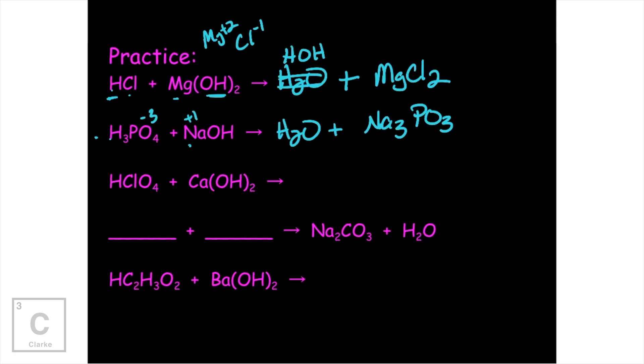Why don't you hit pause and try to work the next three? Okay, let's see how you did. So again, we're going to have water. Calcium, that's a two. Perchlorate, that's a one. And so we're going to get Ca(ClO4)2.